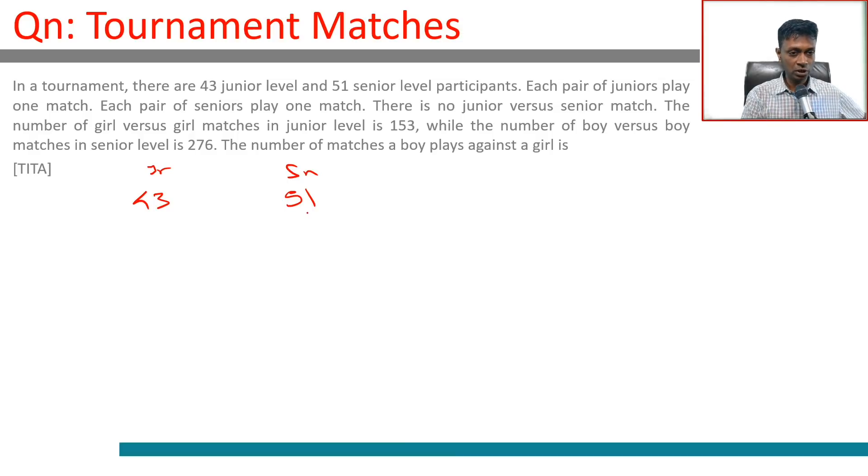The number of girl versus girl matches in junior level is 153, so there are probably boys and girls then. The number of boy versus boy matches in senior level is 276.